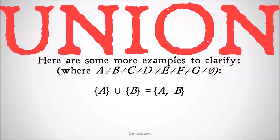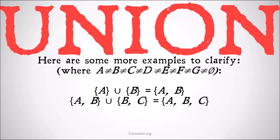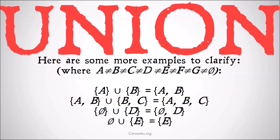The union of the set {A} and the set {B} is just the set {A, B}. The union of the set {A, B} and the set {B, C} is just {A, B, C}. The union of the set {∅} and the set {D} is the set {∅, D}.